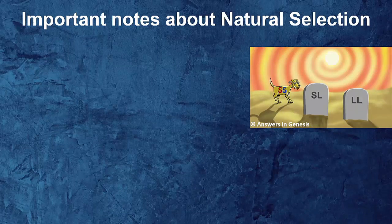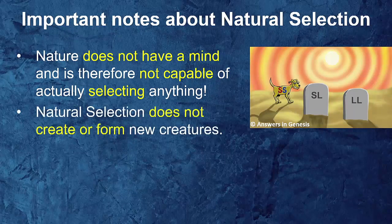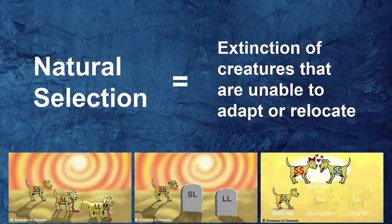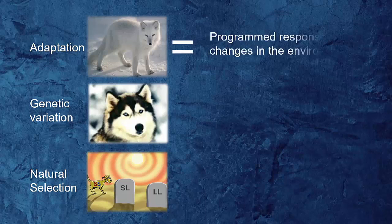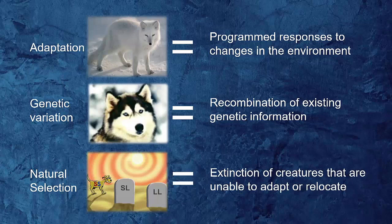There are some important things to know about natural selection. First, nature doesn't have a brain — it's not a person, so it's not capable of selecting anything. Second, natural selection doesn't actually create or form new creatures. And finally, it is the ability or inability of a creature to adapt or relocate that often determines whether or not it lives. Natural selection is actually a process — it is the extinction of creatures that are unable to adapt or relocate. Let's review: adaptation is programmed responses to changes in the environment; genetic variation is recombination of existing genetic information; and natural selection is a process — the extinction of living things that cannot relocate or adapt.